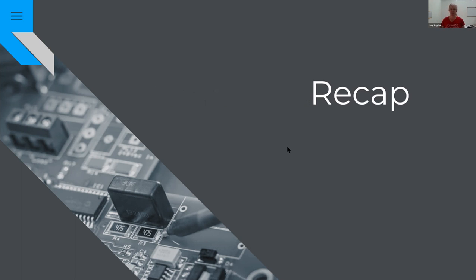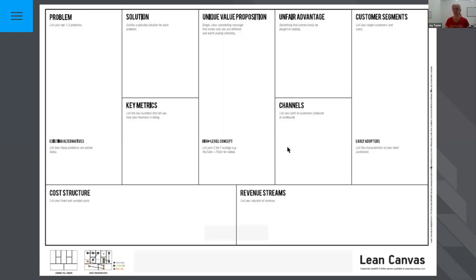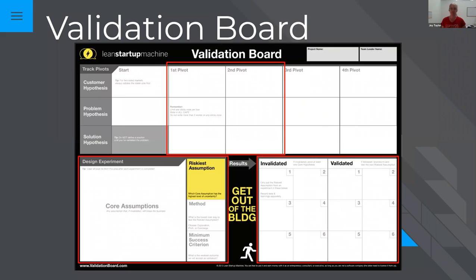We want to do a quick recap of what we've covered so far. In the first week, we looked at the Lean Canvas, a great tool to help break down our idea into a potential business model and work through different sections of thought process and action. We also looked at the Validation Board, another great tool to make sure we're focused on making good decisions based on valid information.